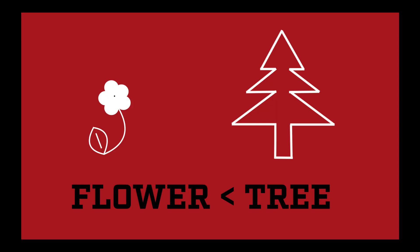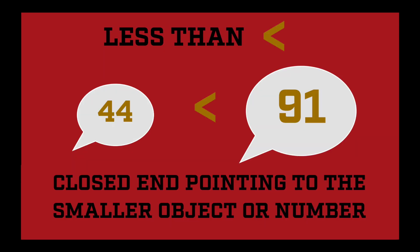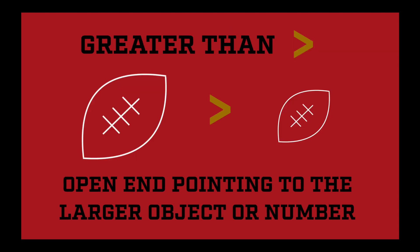The last activity on this page is comparing items. For example, a flower is smaller than a tree, and the number 10 is greater than the number 3. When an object or number is smaller than another, we use a symbol called less than. It looks like the letter V on its side with the closed end pointing to the smaller object or number. If it is bigger than another, the open end will point towards it.